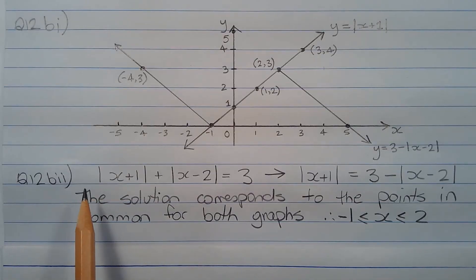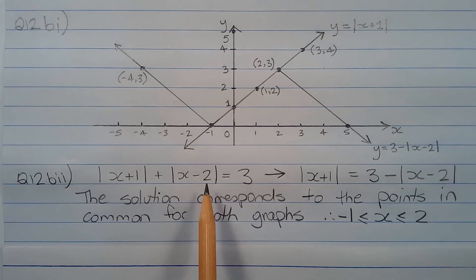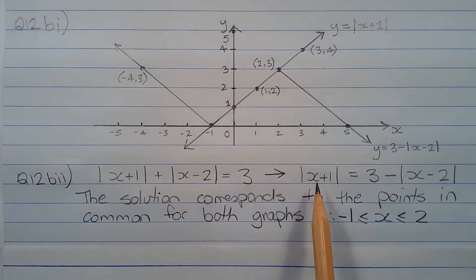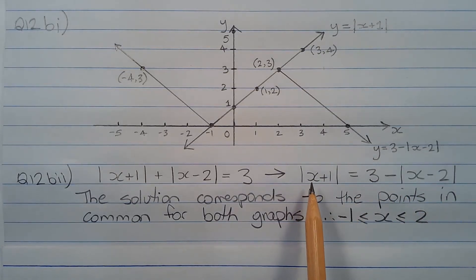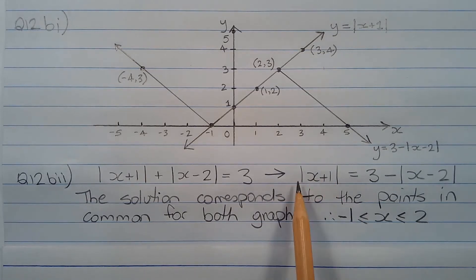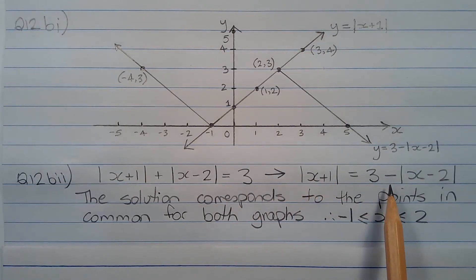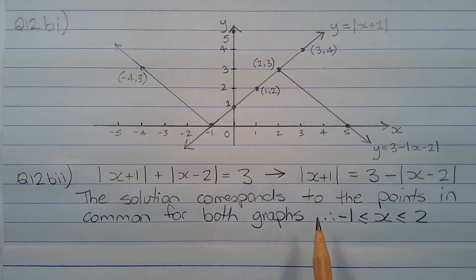The equation — the absolute value of x plus 1 plus the absolute value of x minus 2 equals 3 — can be rearranged so that it becomes the absolute value of x plus 1 equals 3 minus the absolute value of x minus 2. Both sides correspond to the graphs drawn in Part 1, so solving this graphically, the solution corresponds to the points in common for both graphs.